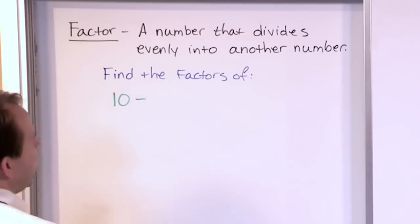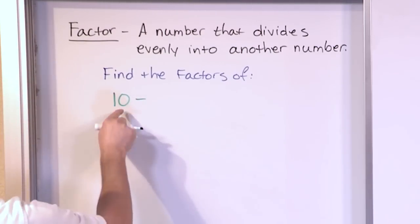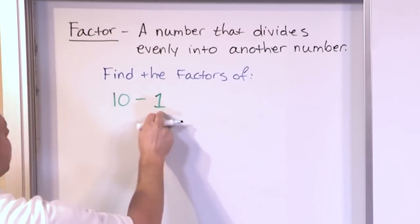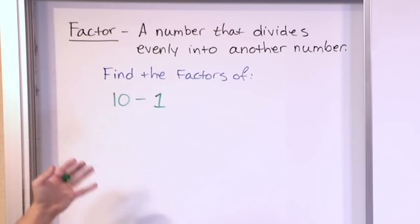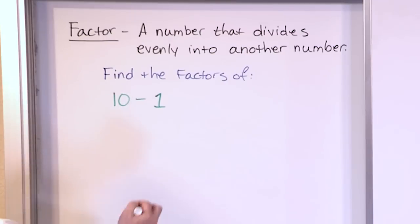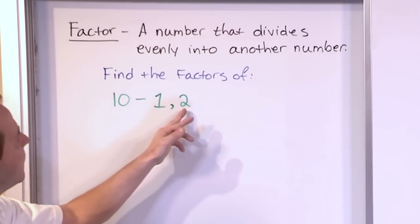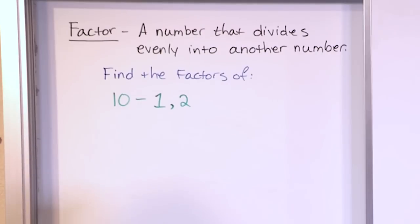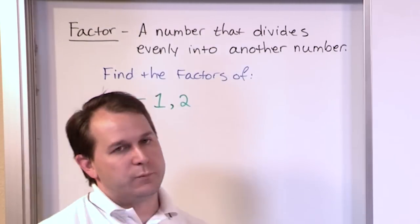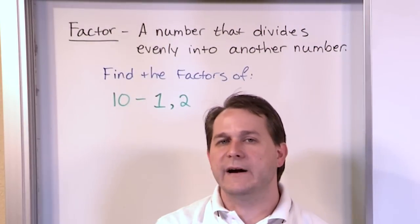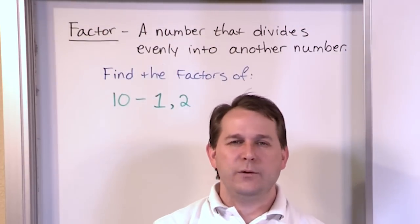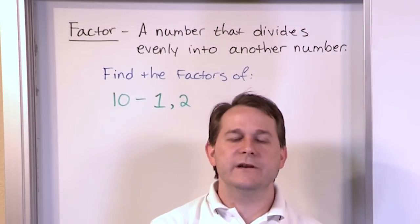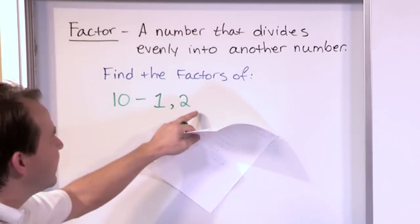Let's start with the number 1 and see how far we can go. Is 1 a factor of 10? Yes — 1 is a factor of 10 because 10 divided by 1 is 10, so it divides in evenly. Is 2 a factor of 10? Yes, it can, because 10 divided by 2 is 5. Is 3 a factor of 10? Here we hit a roadblock because 3 times 3 is 9 and 3 times 4 is 12 — there's no way 3 can divide into 10 evenly, so 3 is not a factor of 10.